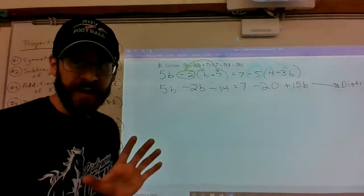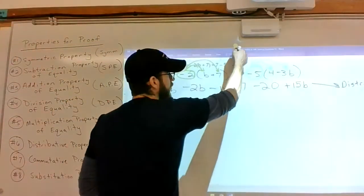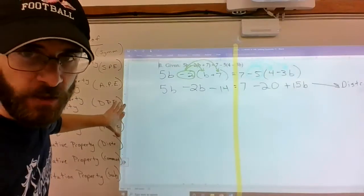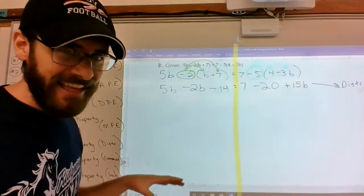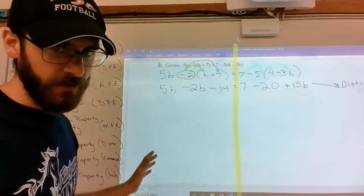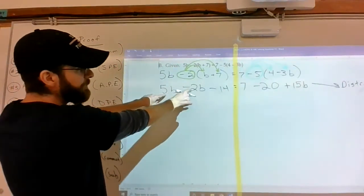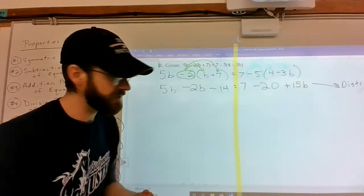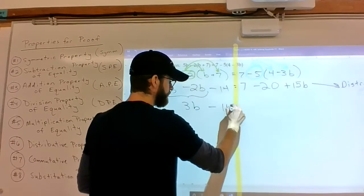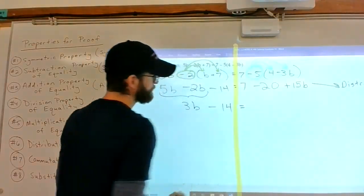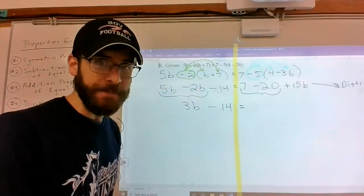Now here's where we have to be very, very careful. You are still going to look at this as I have to simplify the left-hand side of the equation and simplify the right-hand side of the equation before I start doing anything where I'm moving variables to both sides. So what I have to do is say, oh, 5b minus 2b. Got to simplify that on the left. So that's 3b minus 14.